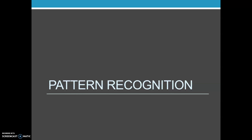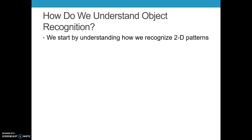Now we're going to move on to talk about pattern recognition. How do we understand object recognition? We've started out by talking about some of the first steps of visual perception — determining where the edges of an object are, using object features and object knowledge to help us figure out where an object is and how to separate it from its background, and looking at two-dimensional patterns. One thing you'll discover is that most of this research is done with letters, which are fairly simple, uncomplicated patterns that most English-speaking participants understand, making them very easy stimuli for research.